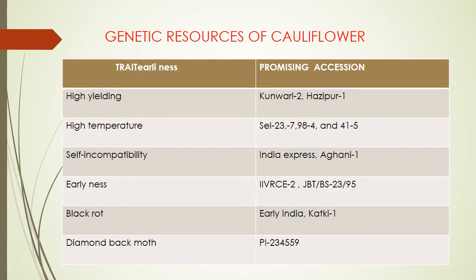Genetic resources of cauliflower: for high yielding — Kanwari 2, Hazipur 1. For high temperature tolerance — Cell 23-7 and 41-5. For self-incompatibility — India Express, Aghani 1. For earliness — IIBRCA-2. For black rot — Early India, Katki-1. For diamondback moth — PI 234559.